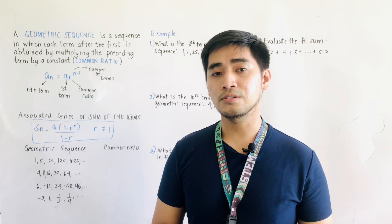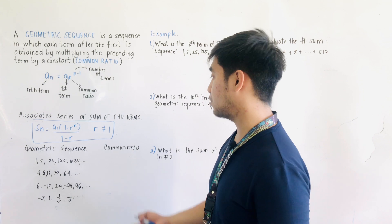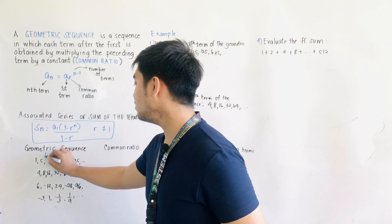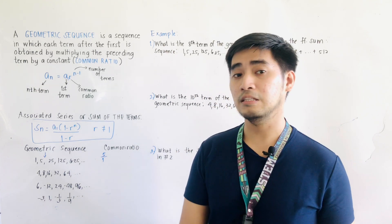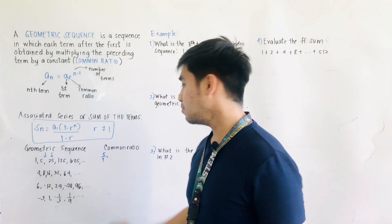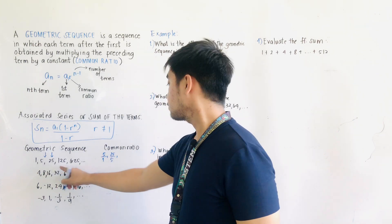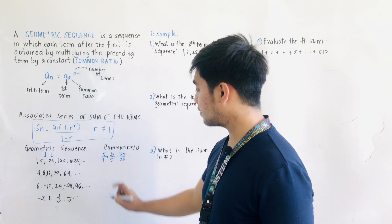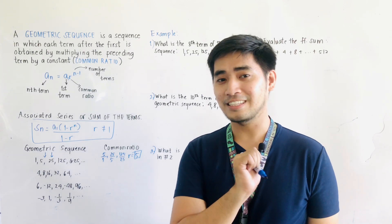Let us try the first one. We need to get the common ratio. We are given 1, 5, 25, 125, 625. We just take the second term over the first term: 5 over 1. Let's check: 25 over 5, 125 over 25, 125 over 25 — all equal 5. Therefore, the common ratio is 5.